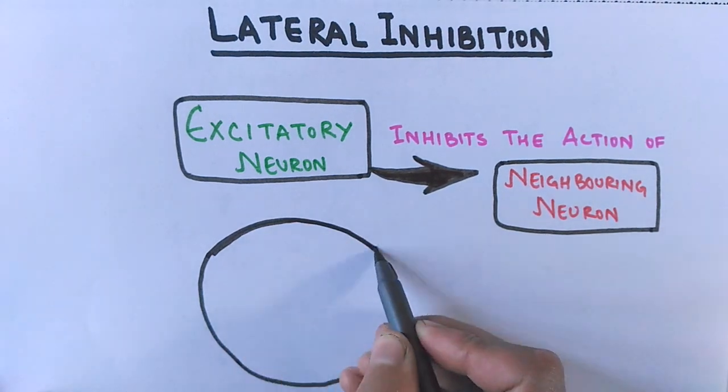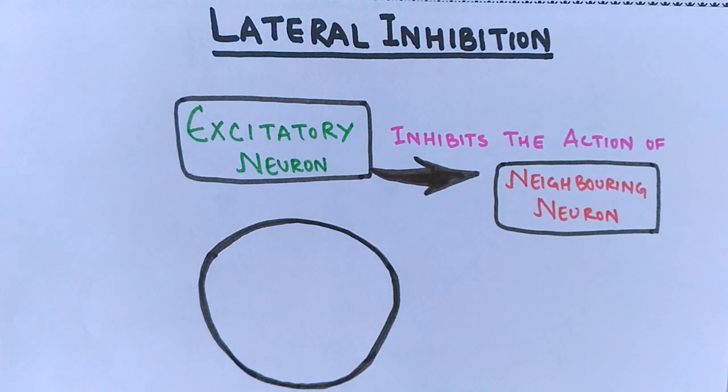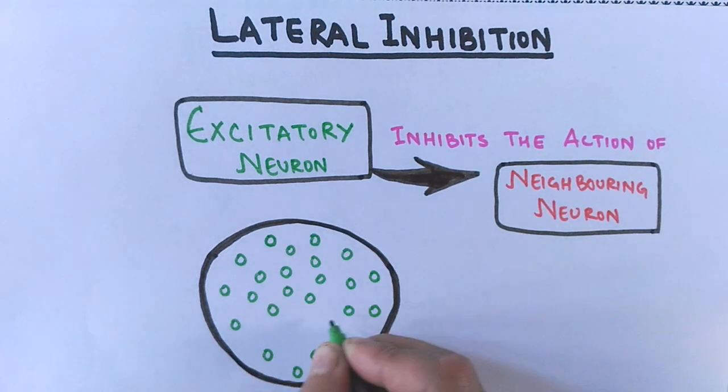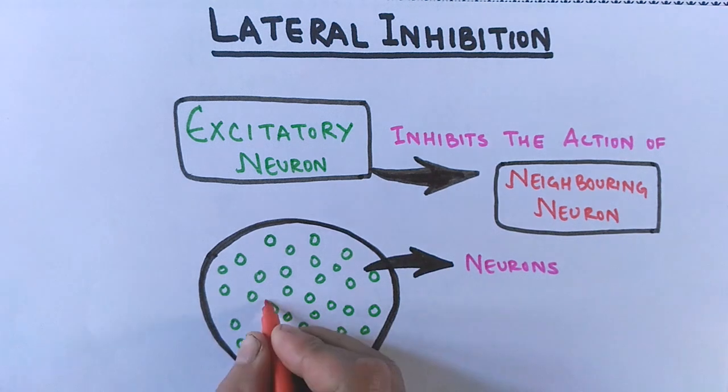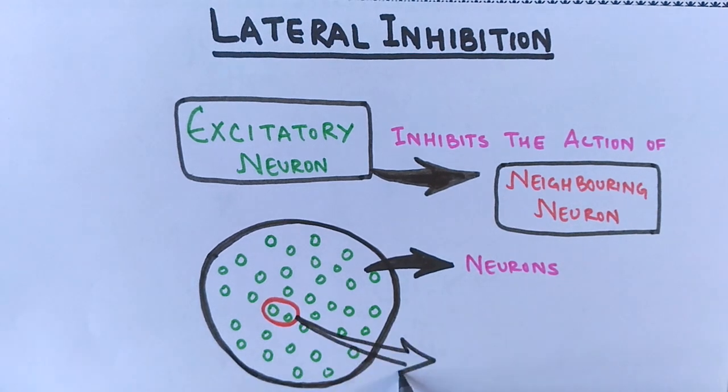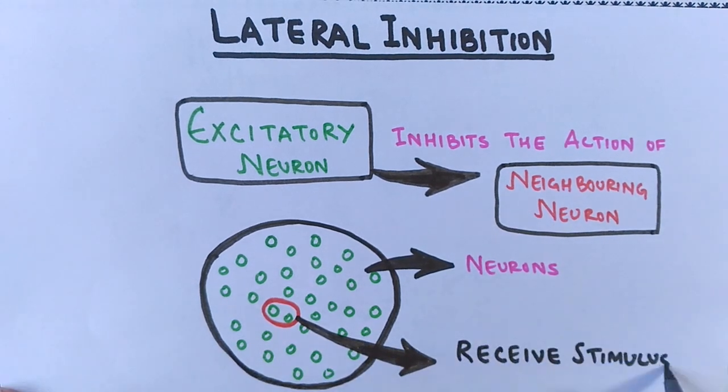First of all, let's try to understand the concept of how it occurs. Suppose we have a circular area with a bunch of neurons in it. Let's say at this point it receives a strong stimulation at these two neurons.